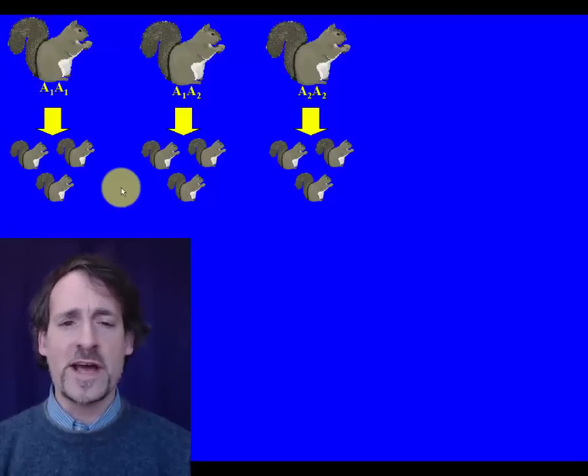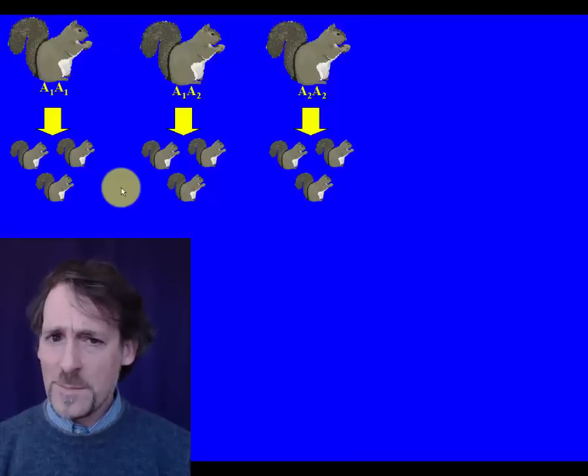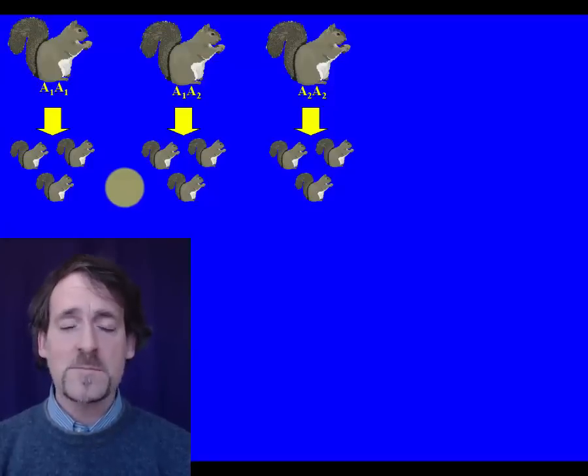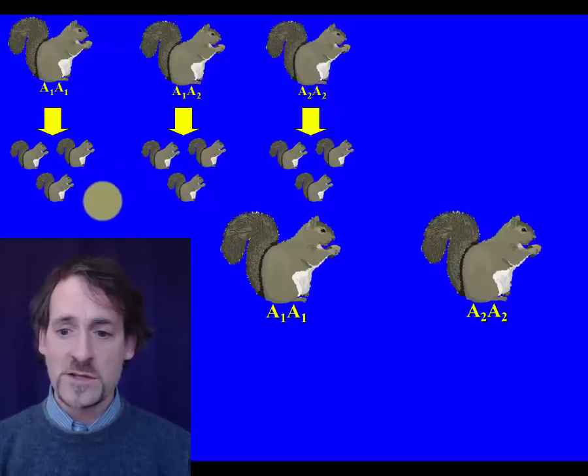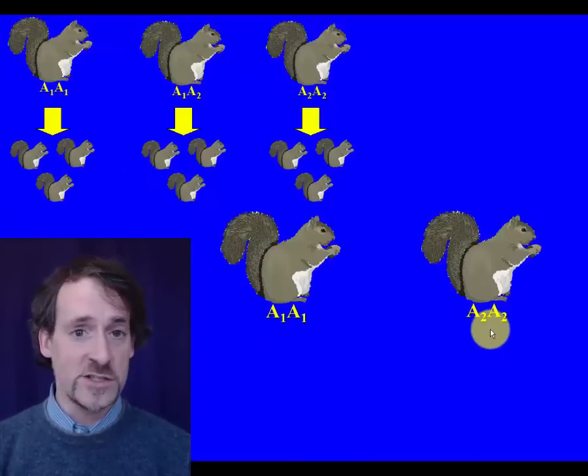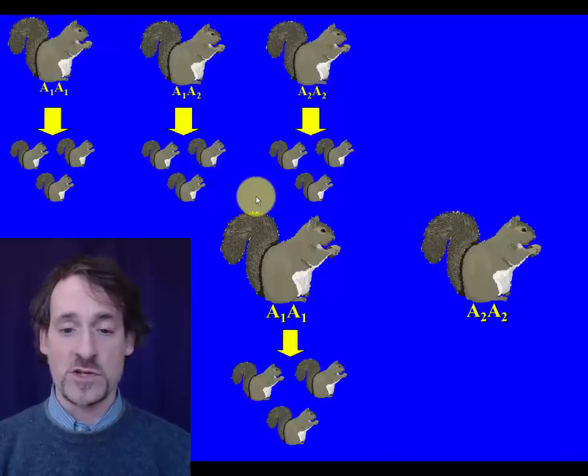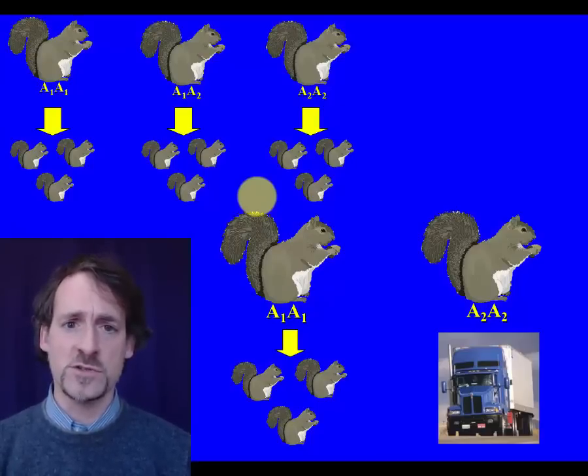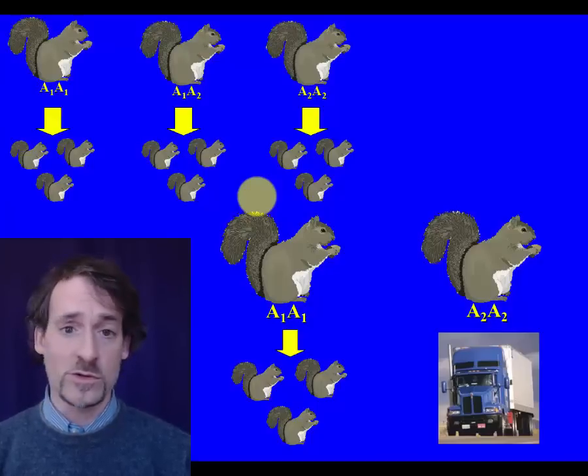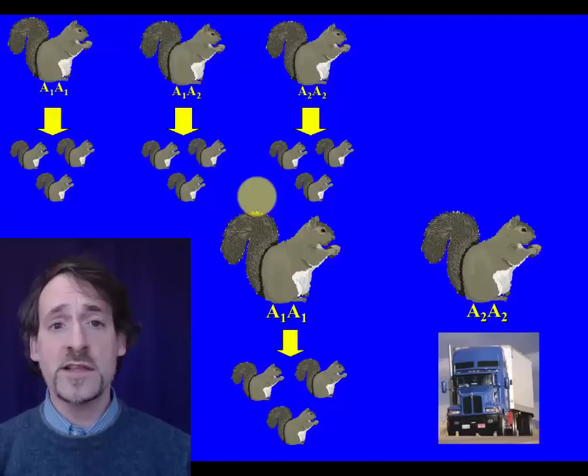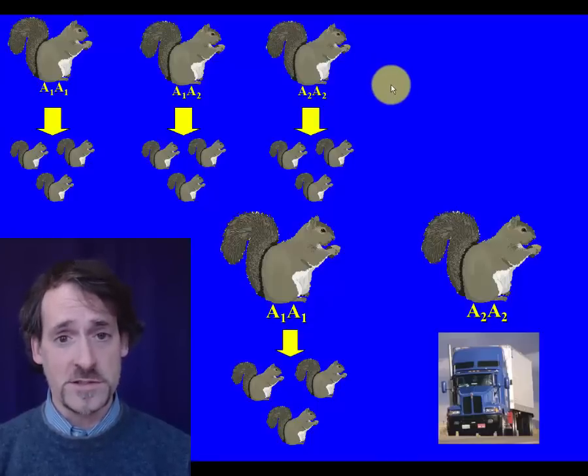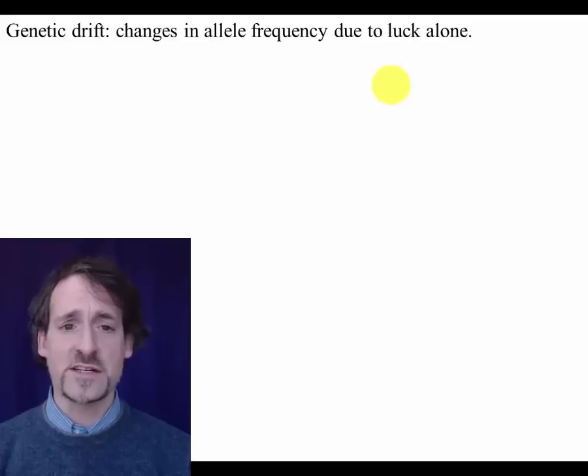Now, this is true on average. However, what happens when you get out into the real world is that the average doesn't quite happen. Luck is one of the things that affects how many offspring an individual has. And so, for example, in the wild you can imagine there might be an A1A1 squirrel and an A2A2 squirrel. The A1A1 squirrel goes on and has three offspring and the A2A2 doesn't. Now, this wasn't due to selection. It wasn't because the A2A2 squirrel was slower or dumber than the A1A1 squirrel. It's just that it was unlucky. But because of luck, the gene pool has lost two A2 alleles. This is what genetic drift is.